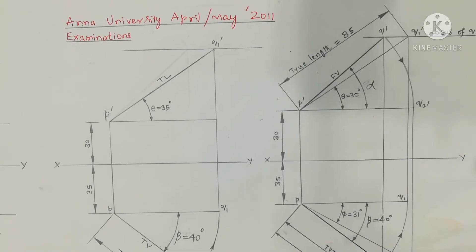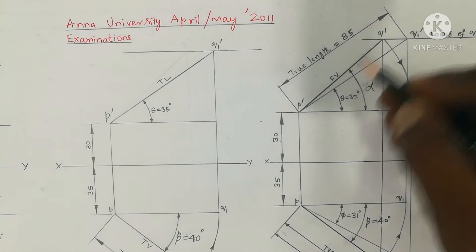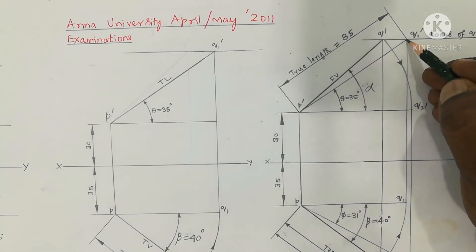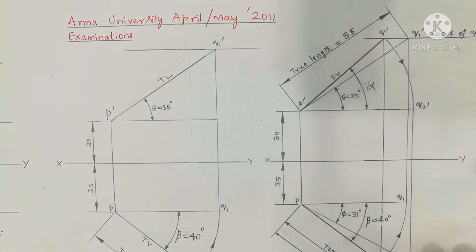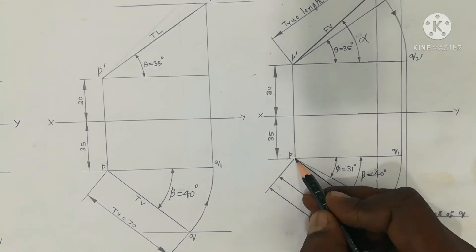If we measure the true length of the line, you can see that it is measured as 85mm. P'Q1' is the true length of the line. So next below the XY from P as center.